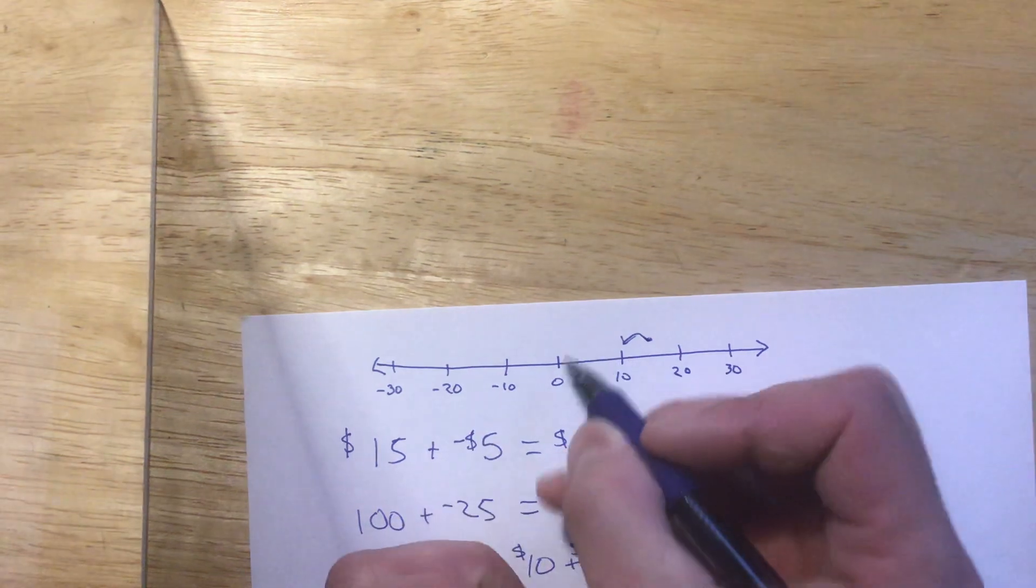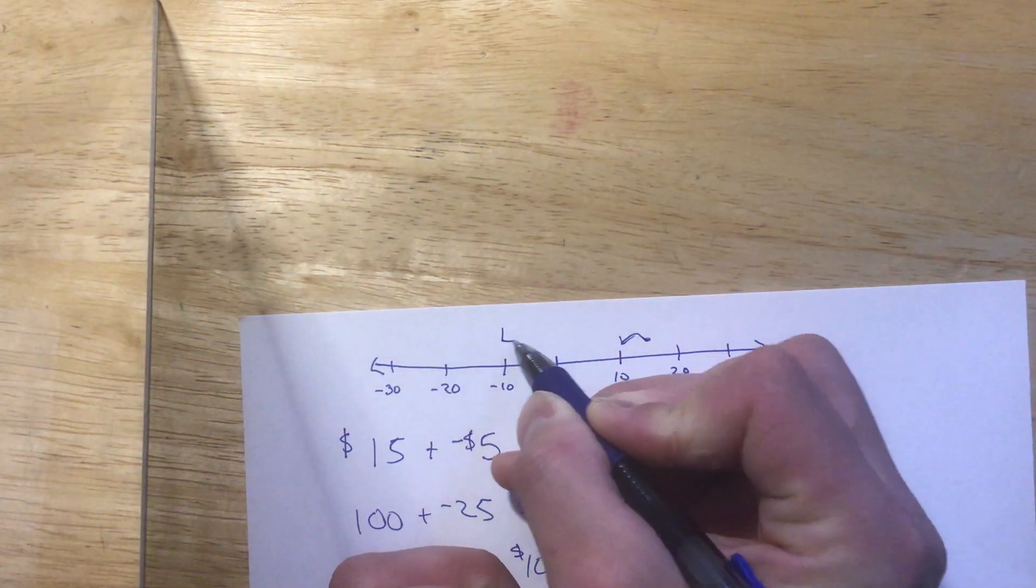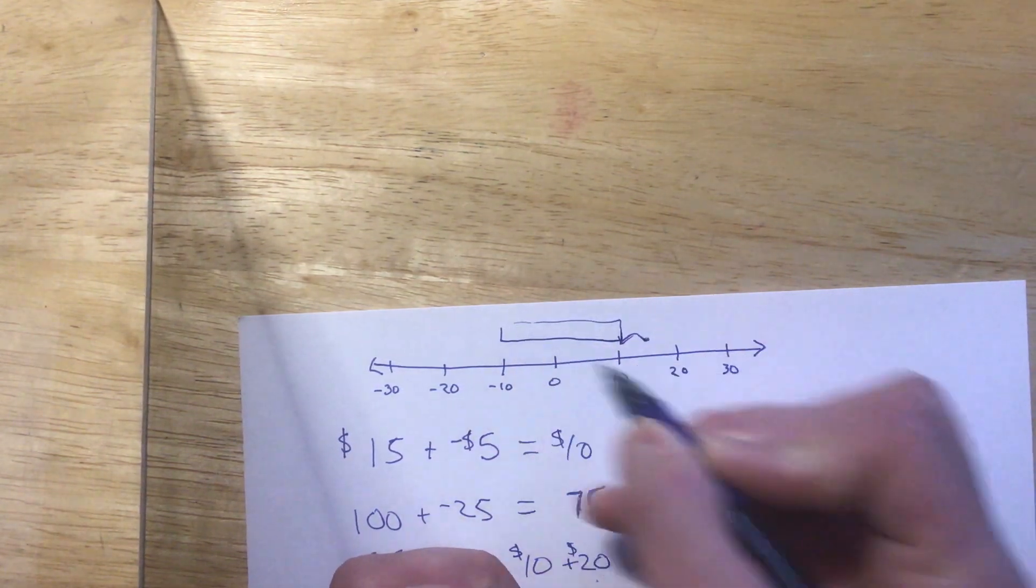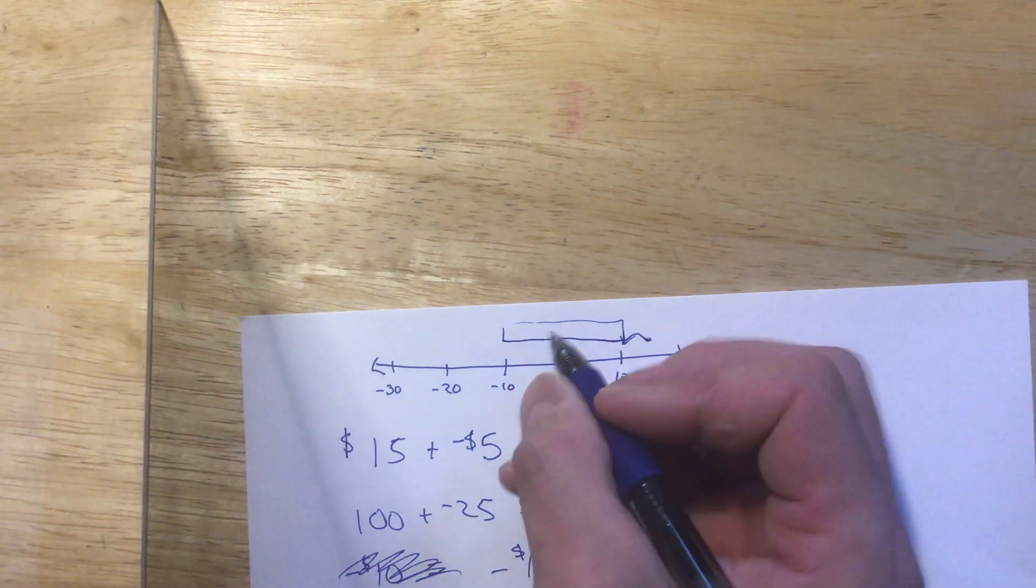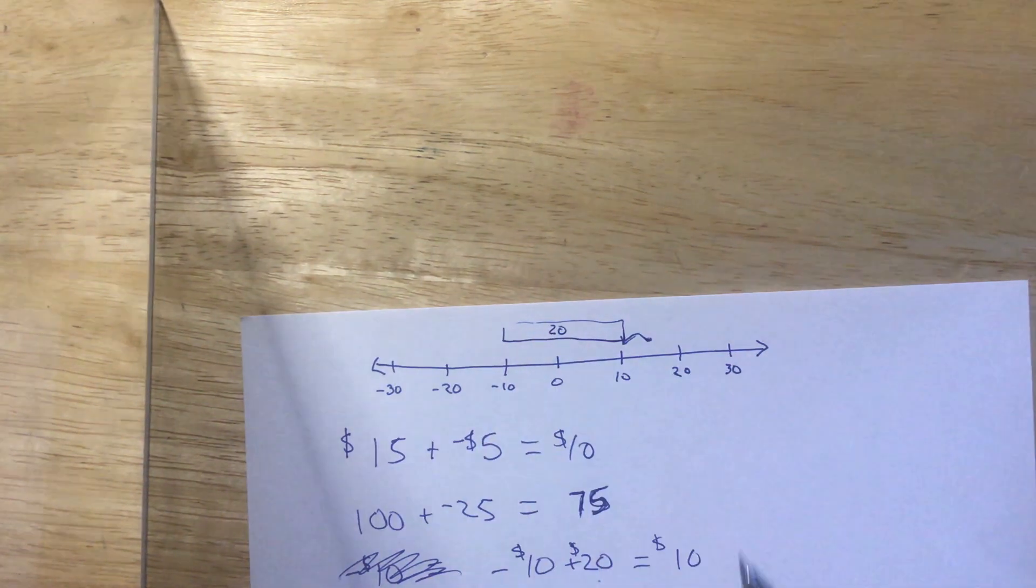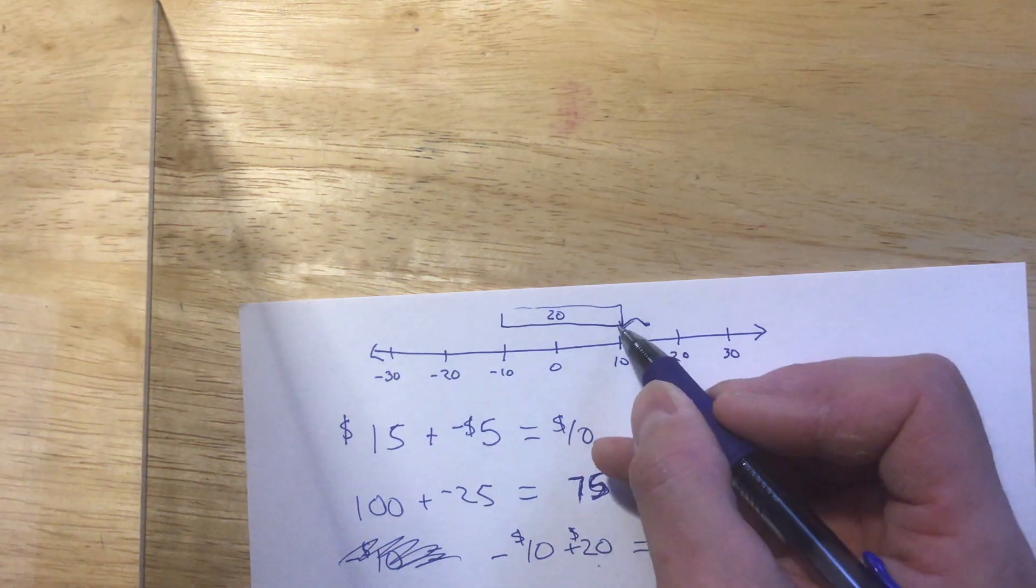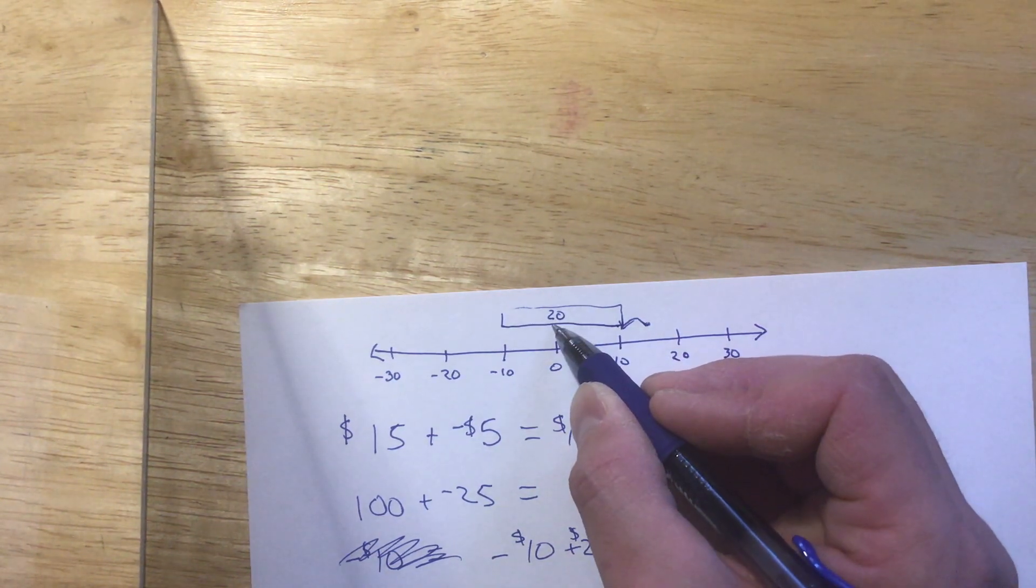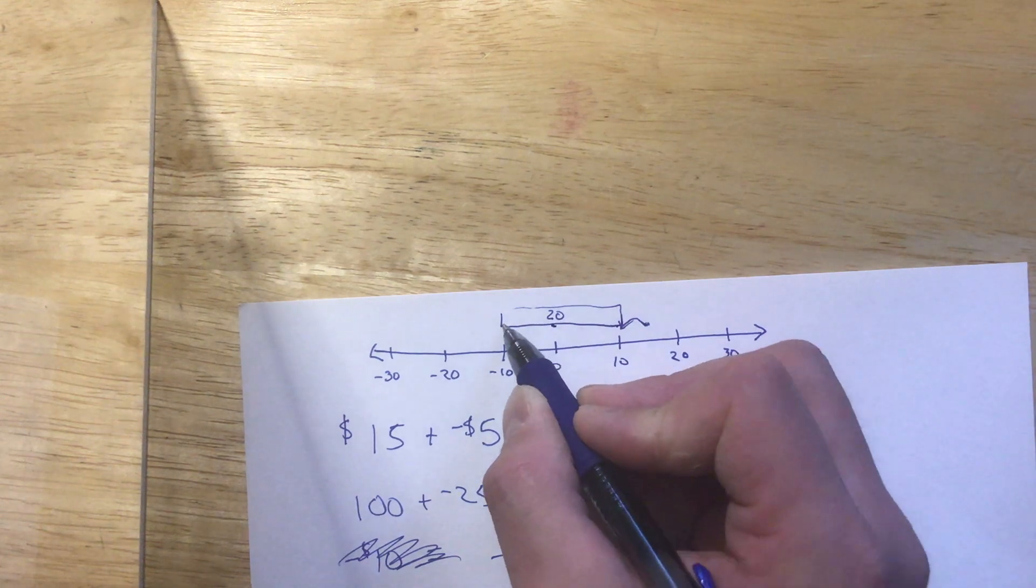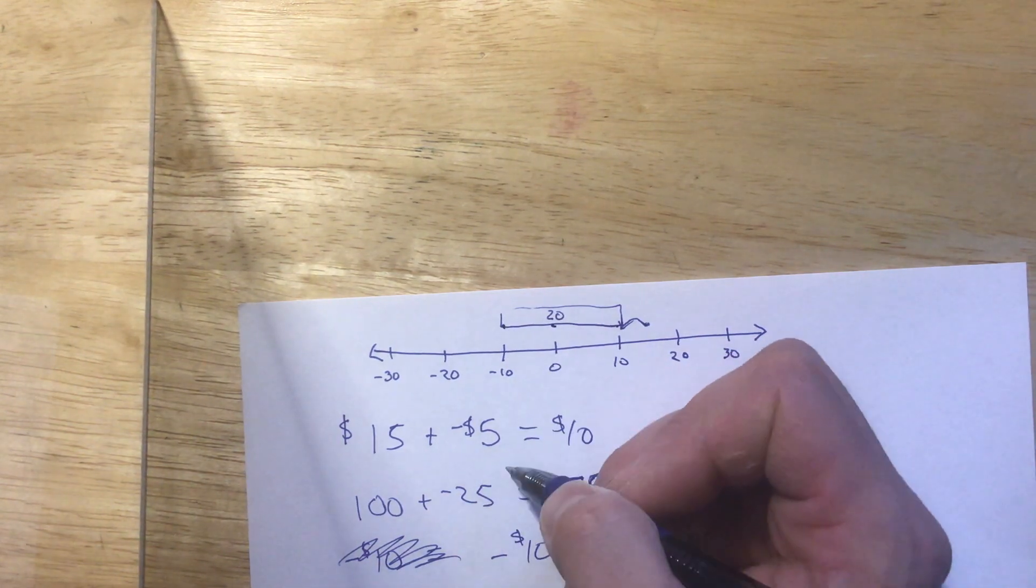Going back to our number line here, if I have something like this, this bar here represents $20. And the reason it represents $20 is because it goes from the 10 to the 0, which is 10 spaces, and from the 0 to the negative 10, which is 10 spaces.